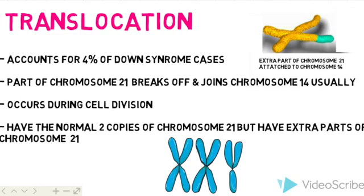Translocation is when part of chromosome 21 breaks off and joins another chromosome, normally chromosome 14, during cell division. There are still 46 chromosomes in each cell, but the extra genetic material makes it similar to a trisomy.